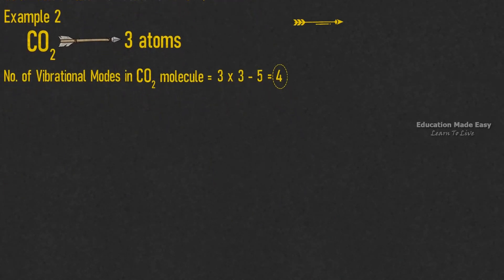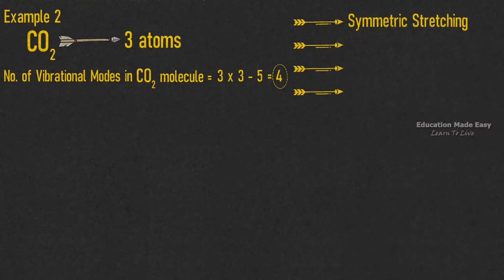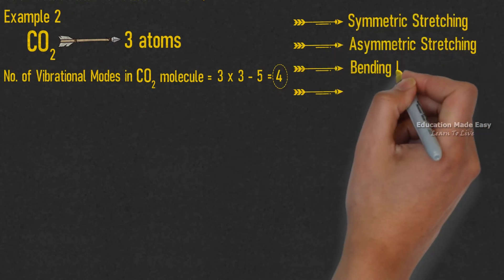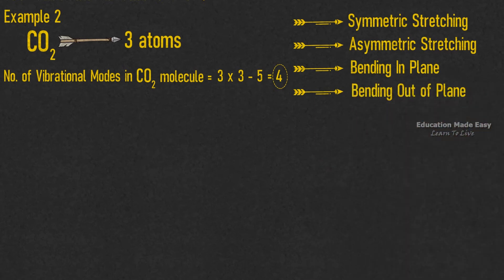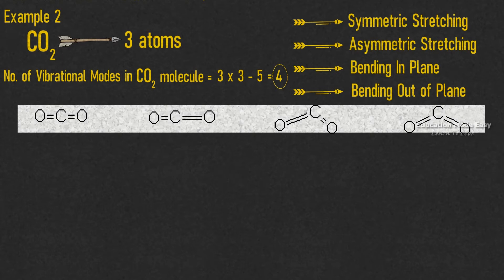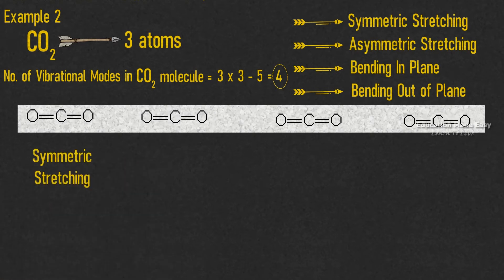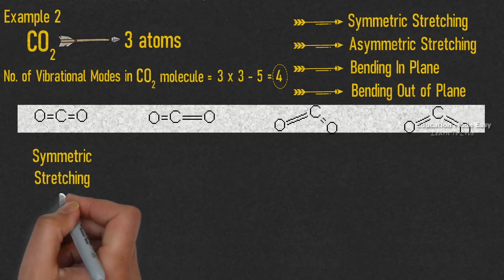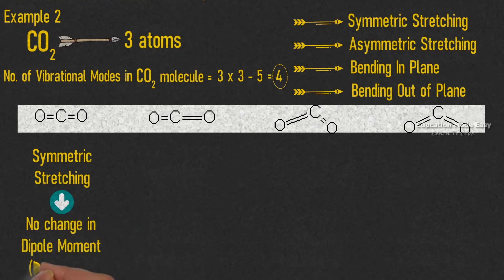The 4 vibrational modes are: symmetric stretching, asymmetric stretching, bending in plane, and bending out of plane. The pictorial representation of these 4 vibrational modes are shown for better understanding. The first picture represents symmetric stretching. In this vibrational mode, there is no change in dipole moment, so it is IR inactive.